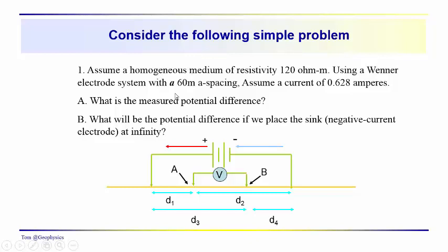Now let's look at a simple problem. We have a homogeneous medium and we're running a resistivity survey in a medium with a resistivity of 120 ohm-meters. We're using a Wenner electrode system with an A spacing of 60 meters — 60 meters from the source to the first potential electrode, 60 meters between the potential electrodes, and 60 meters between the right potential electrode and the sink. We're also given a current of 0.628 amperes. The first question is: what is the measured potential difference? The second question is: what will the potential difference be if we move the sink electrode off to a large distance?